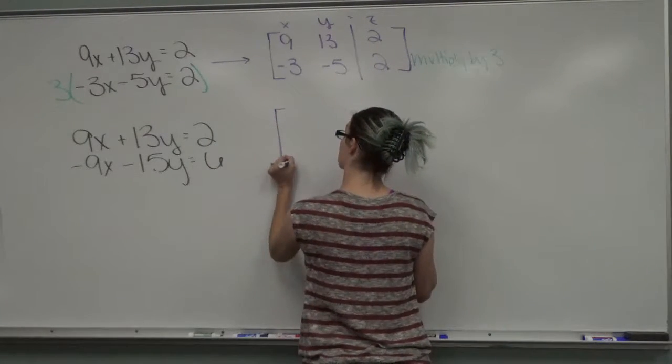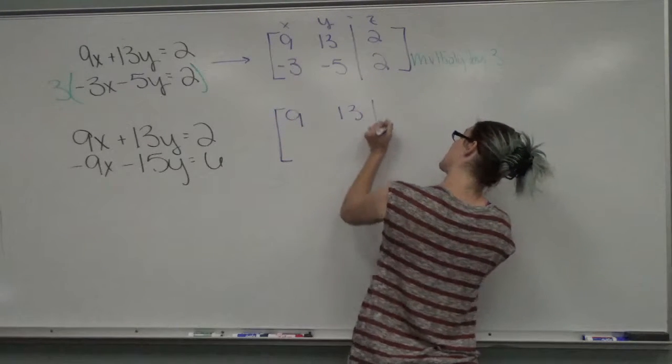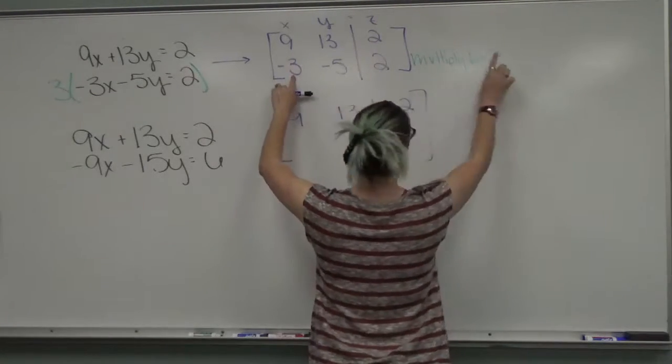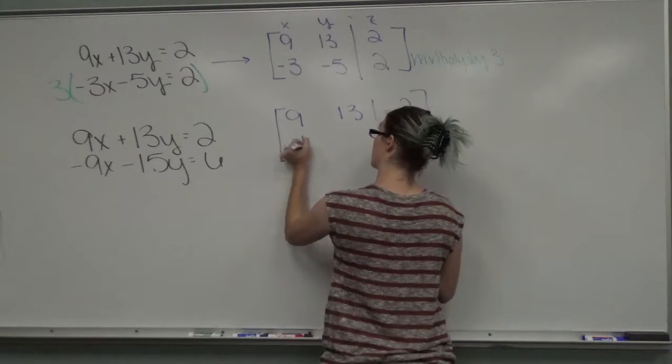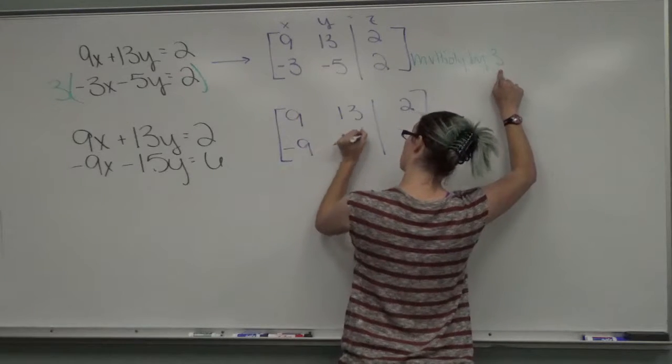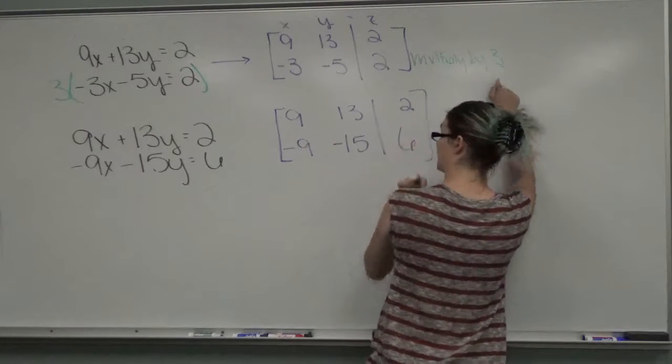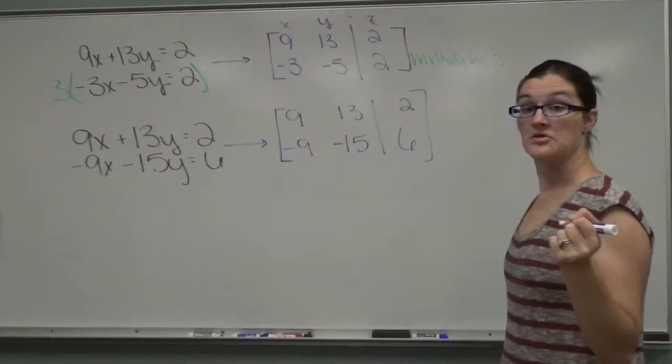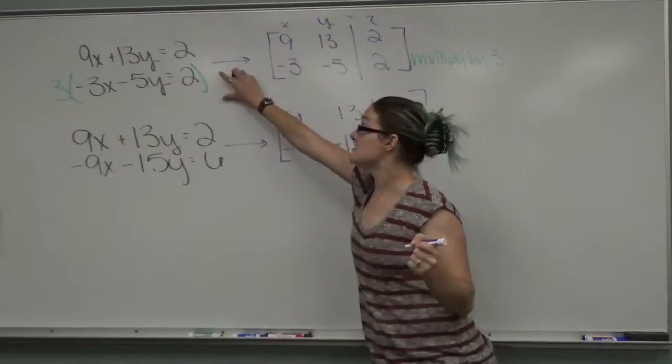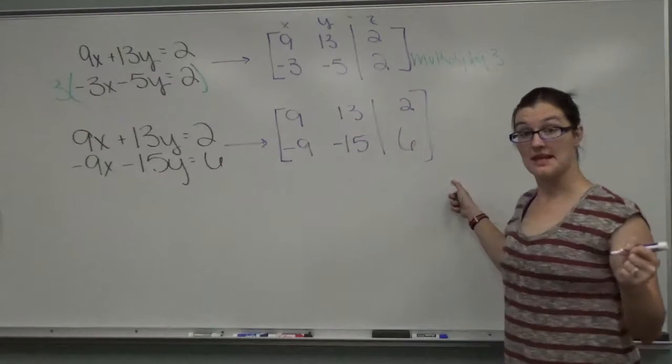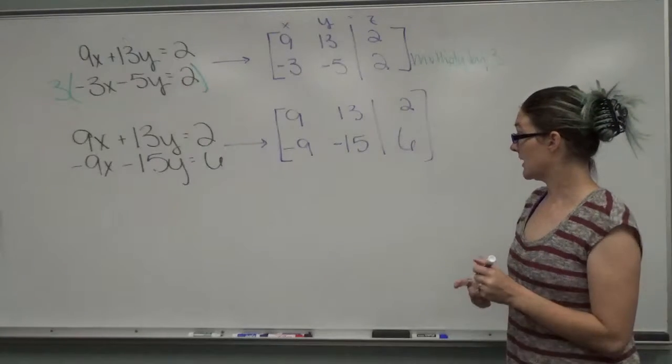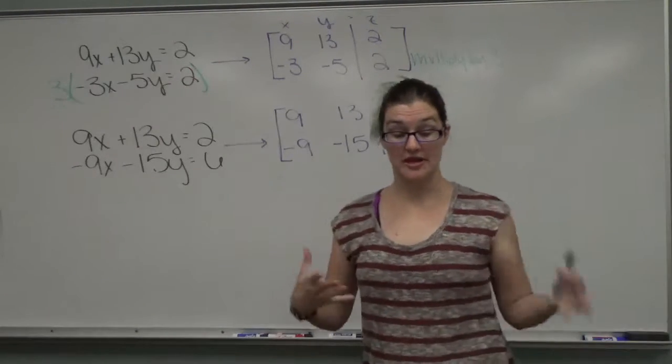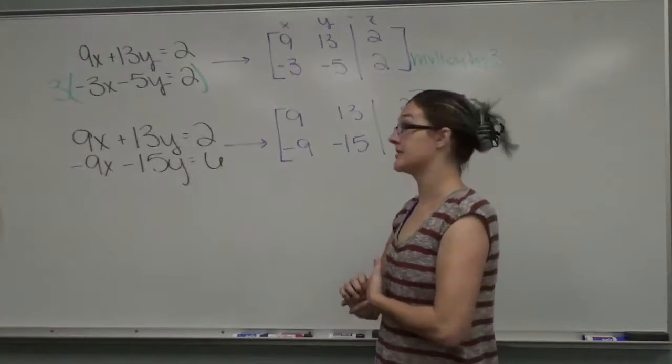So that first row, that 9, 13, and 2, those are staying the same. The second row, I'm going to do negative 3 times 3, negative 5 times 3, and 2 times 3. And I want you to notice it's the same thing. So all we're doing is instead of doing it in equations, we're doing the same thing in matrices. Normally, we would use this step to create a one, which will be explained in a different video.